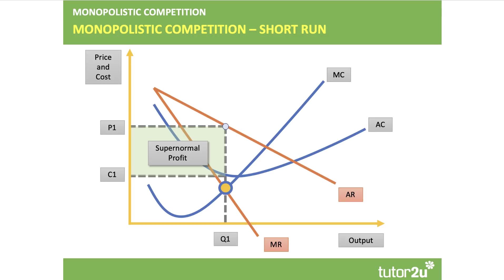Monopolistic competition is a market structure taught by some exam boards. Keep in mind that when you get a question on monopolistic competition, many students either write about monopoly or perfect competition but not about this one. Here we have many firms each of whom produces a differentiated product, and that gives them some pricing power. Typically we draw the average revenue curve — the demand curve — as price elastic, reflecting the large number of substitutes in the market.